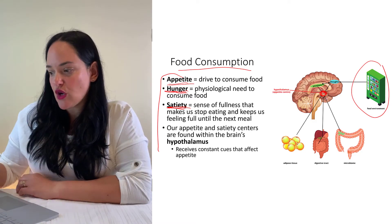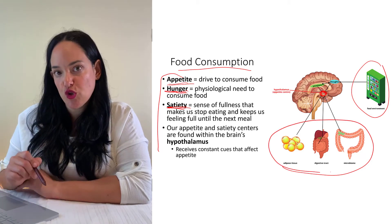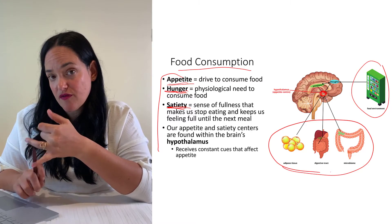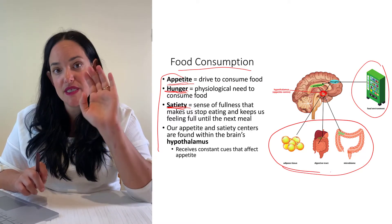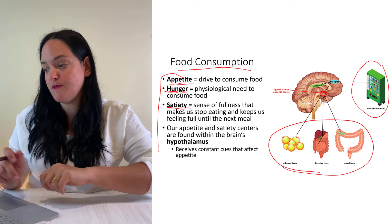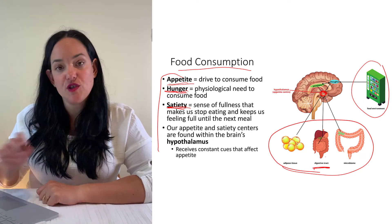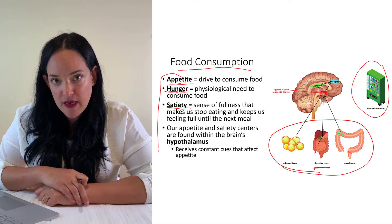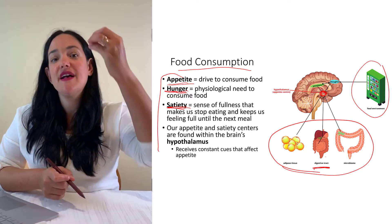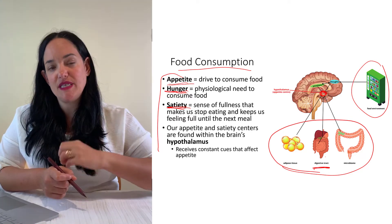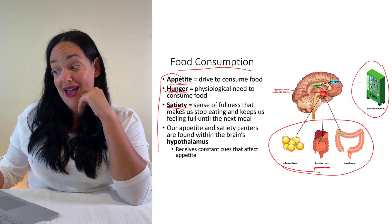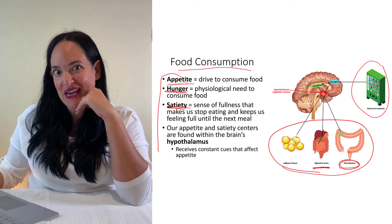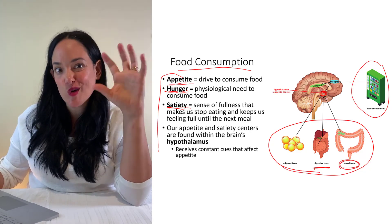All of these are influenced by a whole slew of factors. Our fat cells secrete leptin, which acts on the appetite center to promote satiety — the stop signal. Our digestive tract secretes a whole number of factors including CCK, GLP-1, and ghrelin, which also act on the appetite center to influence appetite. We're also discovering that bacteria in our gut influences appetite, though the exact mechanisms are still being explored.